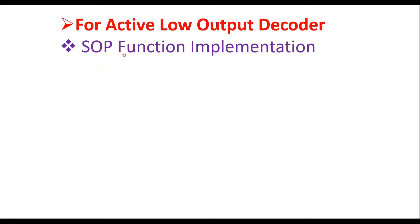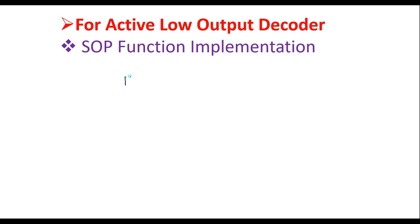For active low output decoder SOP function implementation, let me take one example. Let me consider the function f = Σ(1, 3, 5, 7). We know we can represent this in SOP form, so f equals the sum of min terms 1, 3, 5, and 7.